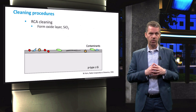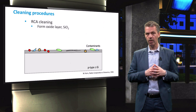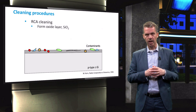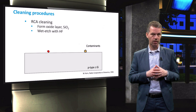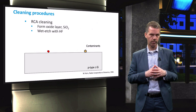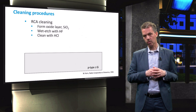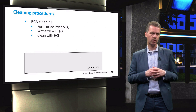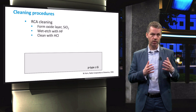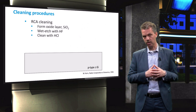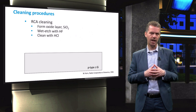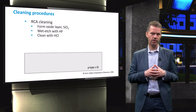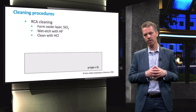The first step of RCA cleaning is to create an oxide layer using ammonium hydroxide and hydrogen peroxide. The contaminants become partially embedded in the oxide layer, which is then removed by wet etching with hydrogen fluoride. In the final step, hydrochloric acid is used to remove any leftover contaminants. In between cleaning steps, the wafers are rinsed in distilled water using an ultrasonic bath, a device that uses high frequency sound waves to agitate a solvent and kick loose contaminants on the wafers.